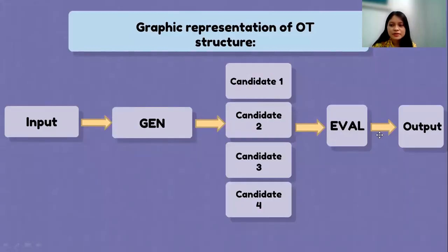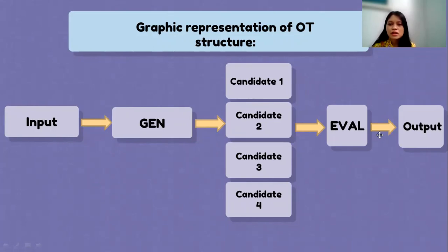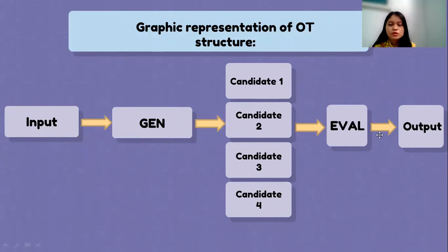Here is the table and graphic representation of the OT structure. It starts from the input, or lexicon, then moves to the generator. As explained, in the generator there will be some candidate words: Candidate 1, 2, 3, and 4. Then they are processed by evaluation, which determines which candidate is the most optimal to be used as the output.